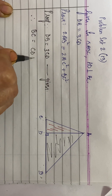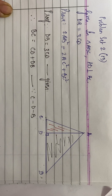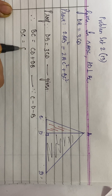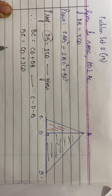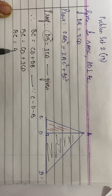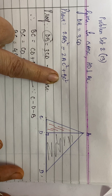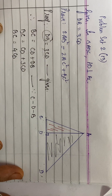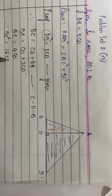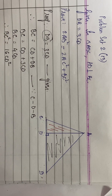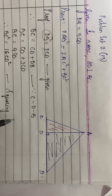Since BC is made up of CD plus DB, and DB is thrice CD, BC will become CD plus 3CD, which equals 4 times CD. The claim requires BC square, so squaring both sides: BC square equals 16 times CD square.